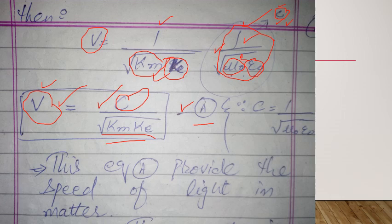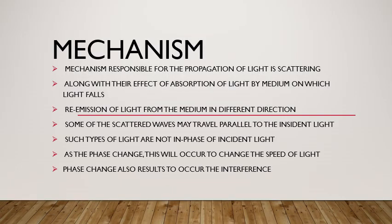Speed of light in matter کی calculation find out کر لی، اب اس کا mechanism discuss کرتے ہیں۔ جو propagation of speed of light in matter کا basic mechanism ہے وہ ہے scattering — مطلب light کا different directions میں بکھر جانا۔ جب incident light matter پر پڑتی ہے تو وہ scattered ہو جاتی ہے مختلف directions میں۔